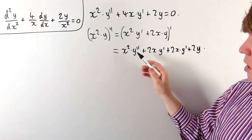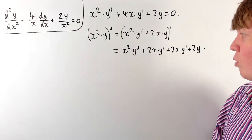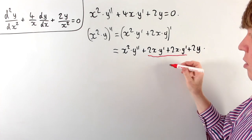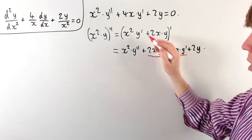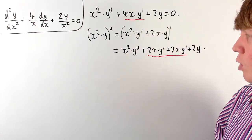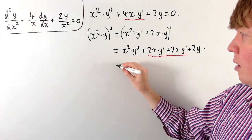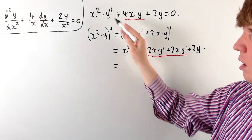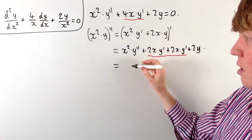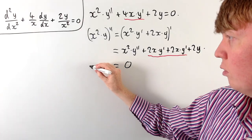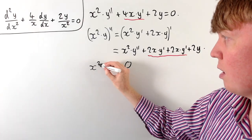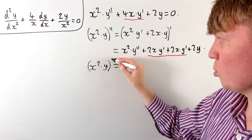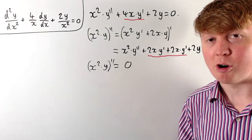We can see this is actually the original expression we had. The two 2xy prime terms combine to give 4xy prime, matching our equation. So we can conclude that this second derivative is equal to the left-hand side, meaning the second derivative of x squared times y is just equal to zero.